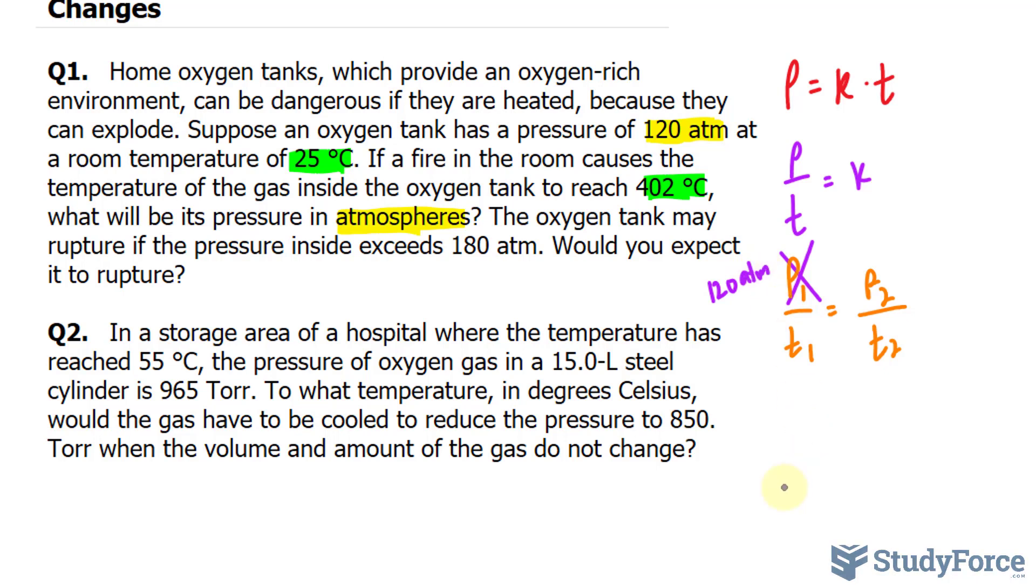Now, for this equation to work, and by the way, it has its own name. It's called the Gay-Lussac's Law. The temperature needs to be in Kelvin, so we need to convert 25°C into Kelvin. I will write it down over here, the conversion. So I'll take 273 plus 25°C, and this is what it is in Kelvin, which is 298 Kelvin. So I'll replace t sub 1 with 298.